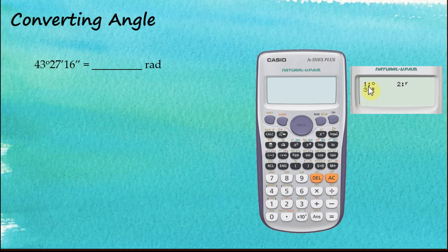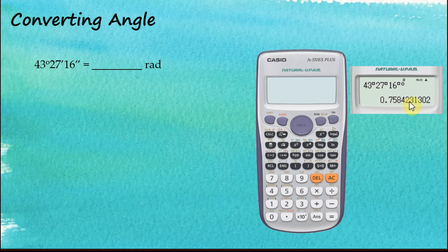Go to shift DRG and choose degree (option 1). You can see the little degree symbol indicating this is degrees. Press equal, and the answer is given in radians: 43° 27' 16" equals 0.7584 radians.